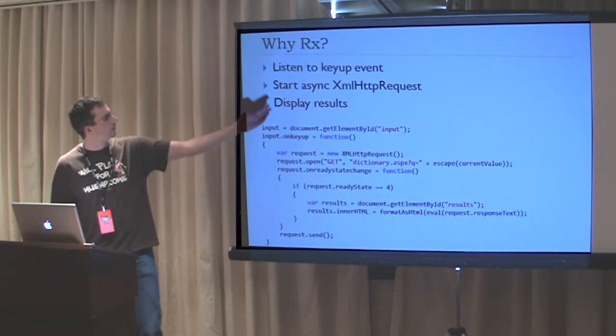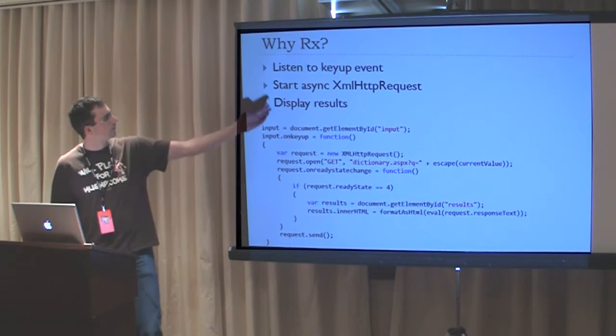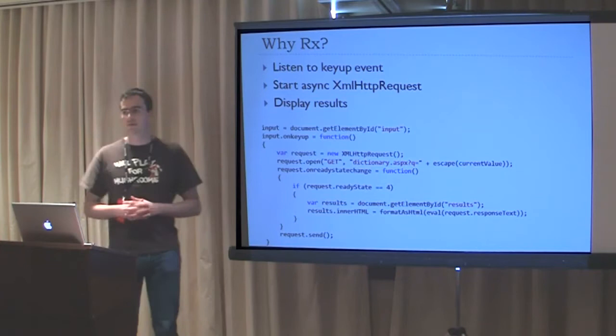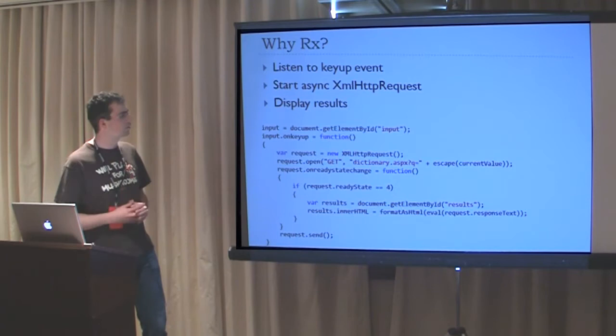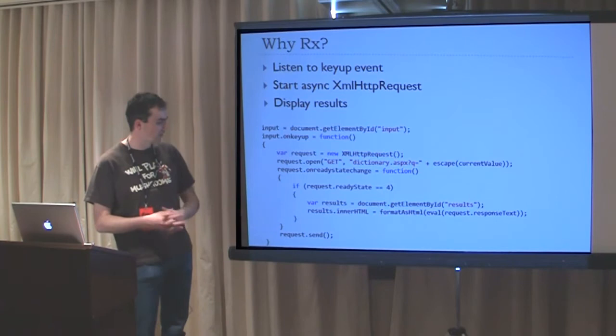If you look at that sample, it does a key up, starts an async XMLHttpRequest, and then displays the results. You could write it like this - this is a very basic sample, not very well implemented, but a good first attempt. You hook up to the input key up event, start an async HTTP request, and once it comes back, format the result as HTML.